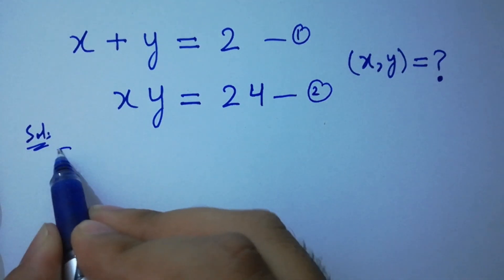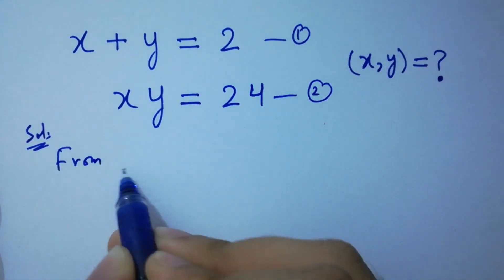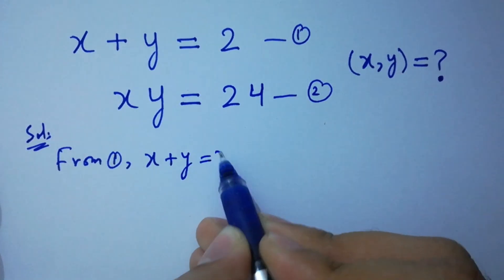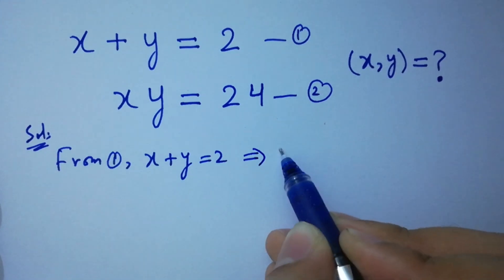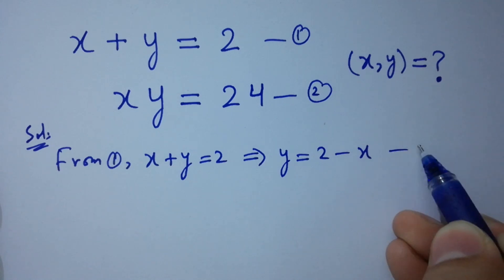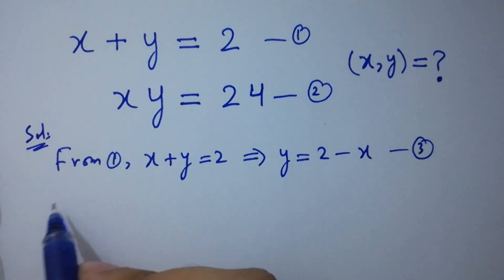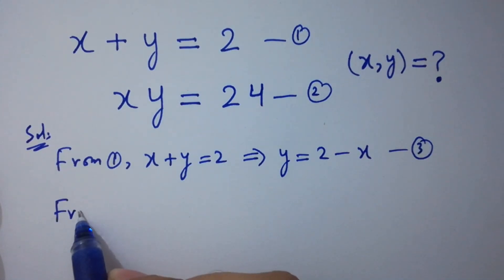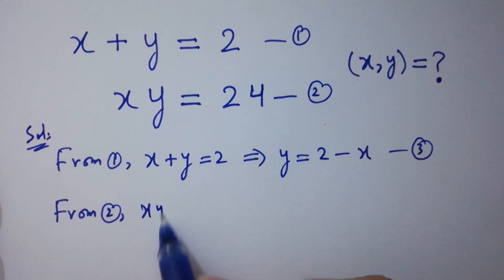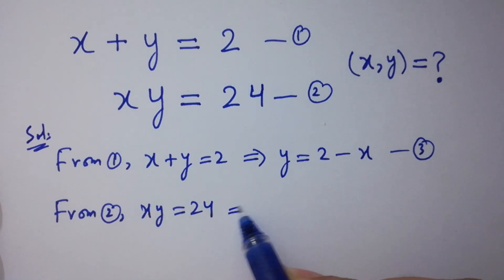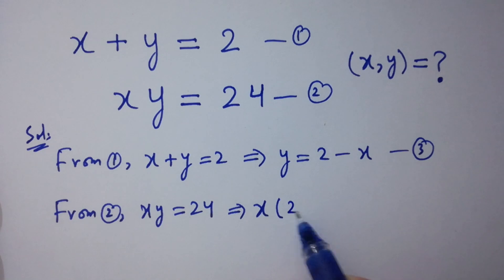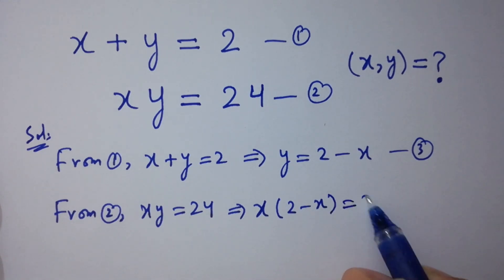From the first equation, x plus y equal to 2, we get y equal to 2 minus x — let's call this the third equation. From the second equation, xy equal to 24, we substitute the value of y: x times (2 minus x) equal to 24.